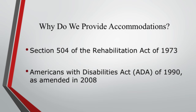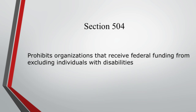This is going to be the briefest overview of the legal side of why we provide accommodations. Section 504 of the Rehabilitation Act of 1973 is the baseline — where we start. It prohibits organizations that receive federal funding from excluding individuals with disabilities. This is important because UGA receives federal funding, and UGA does not want to lose that federal funding.